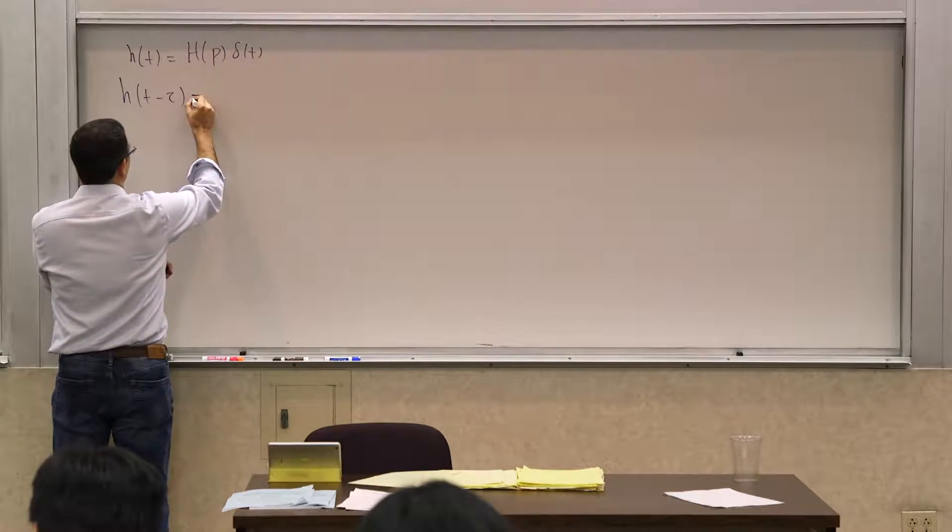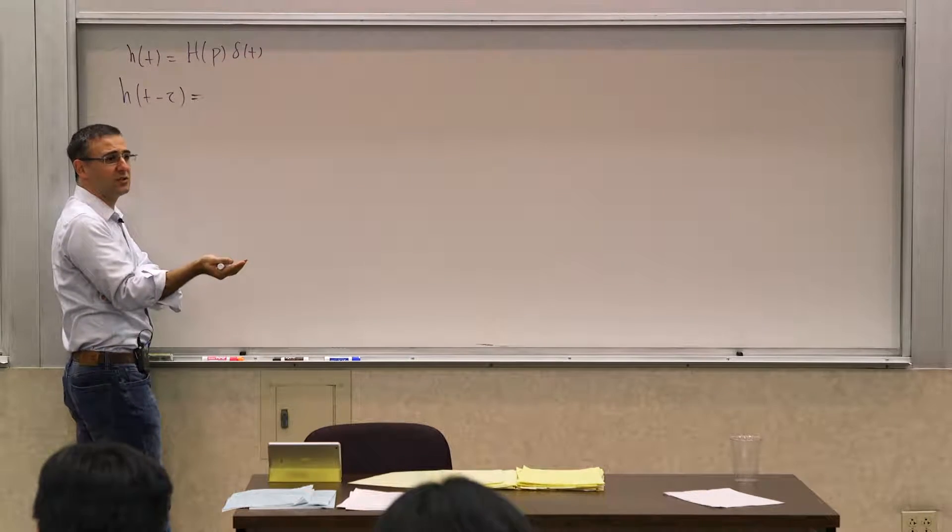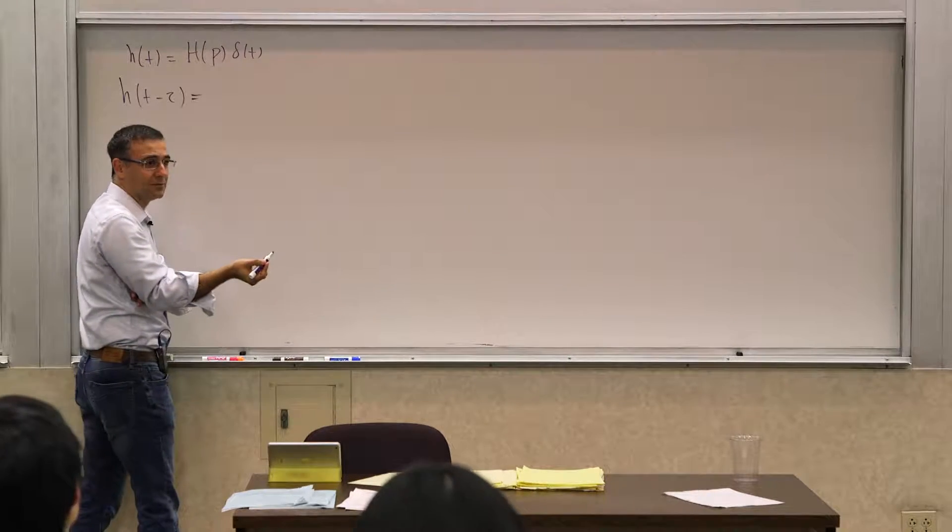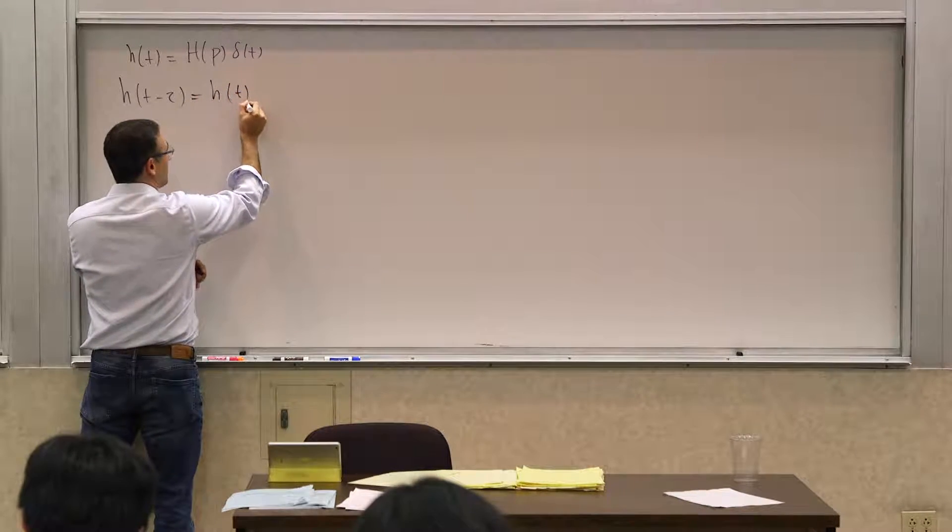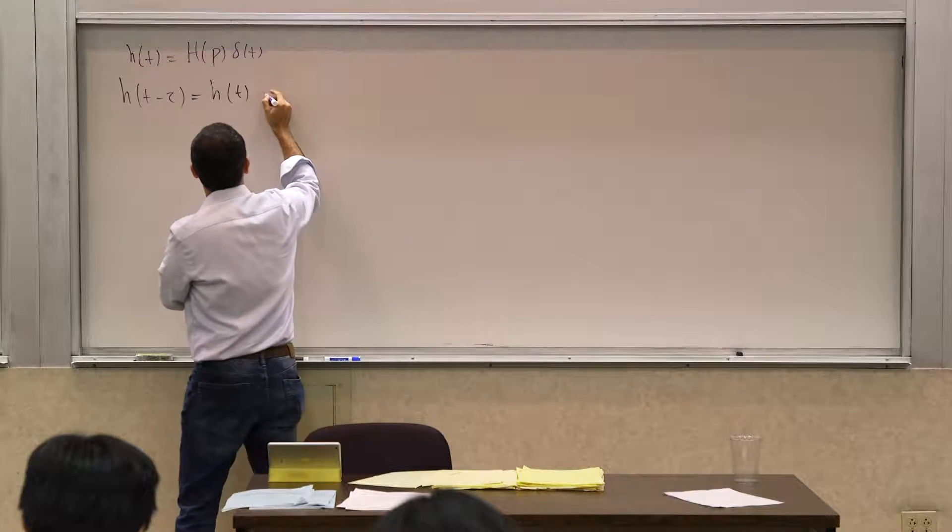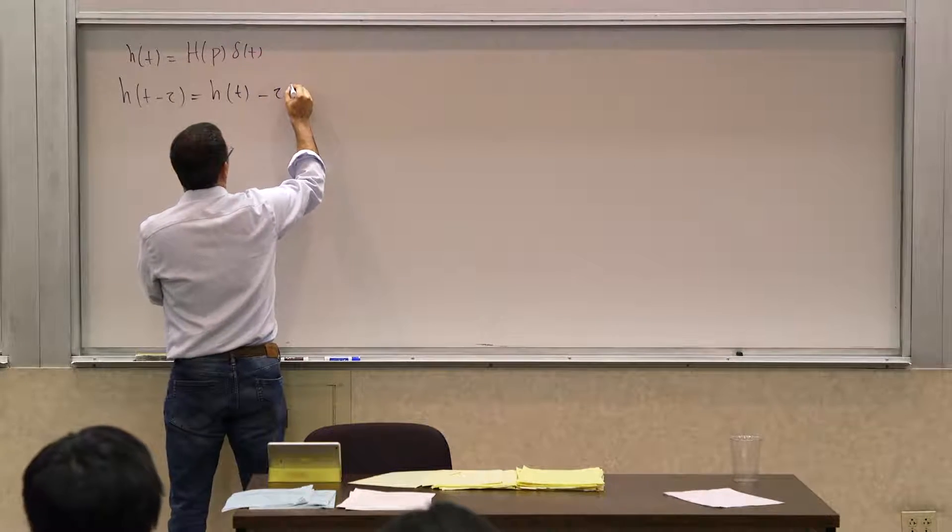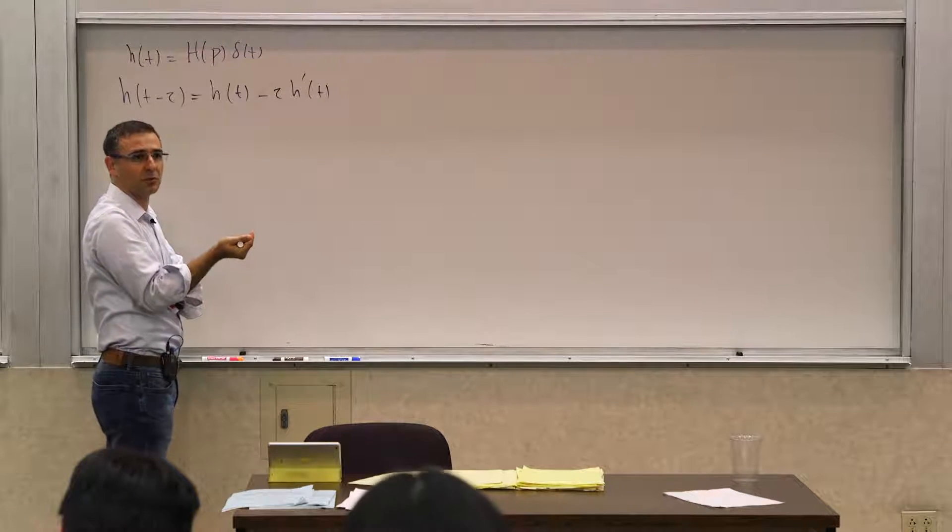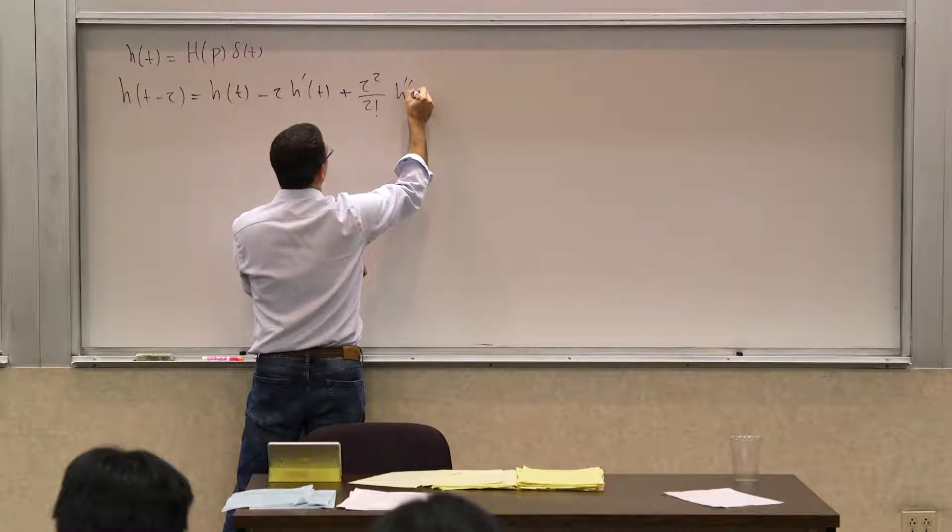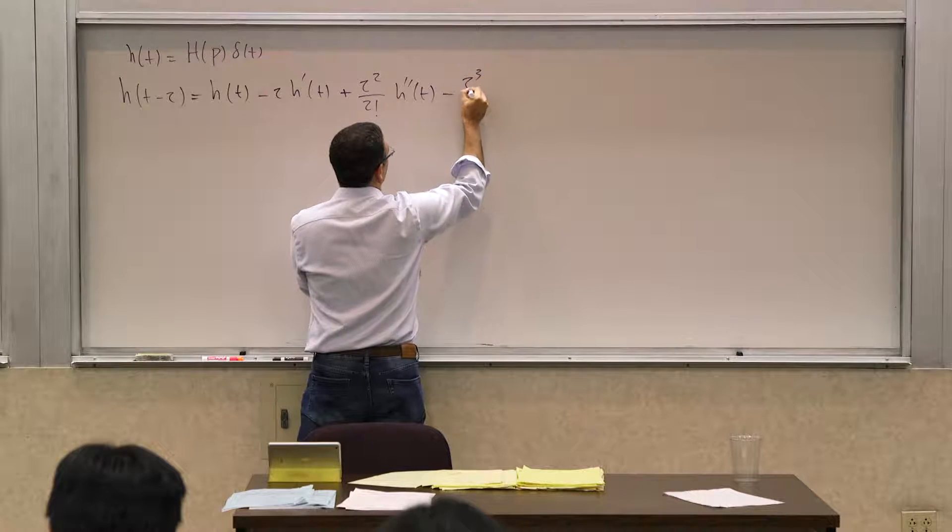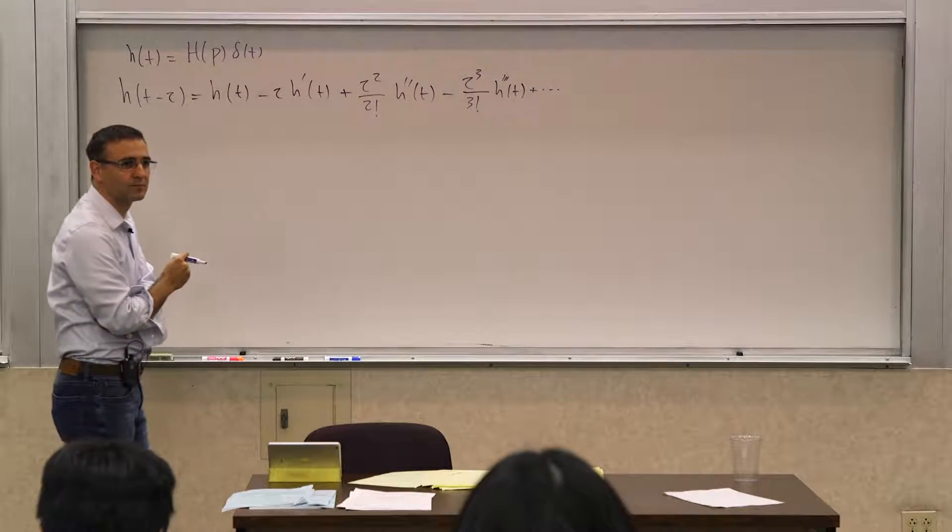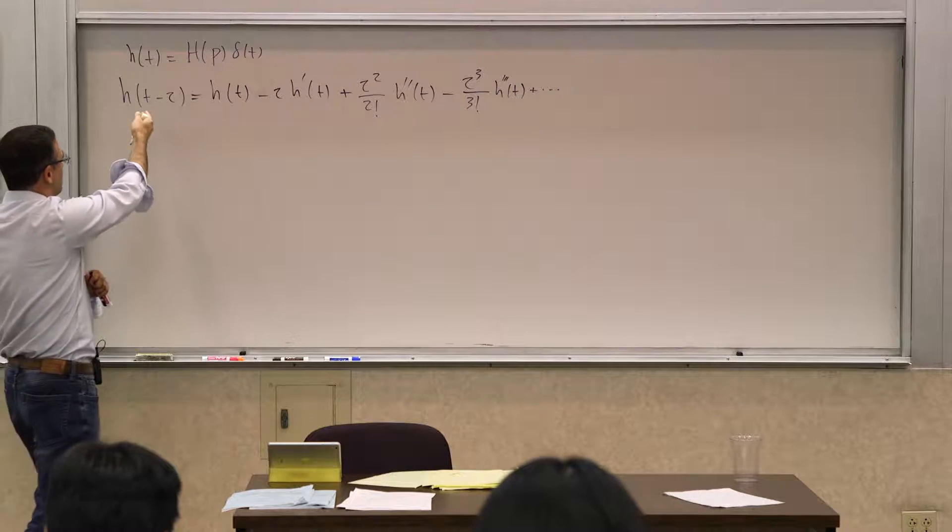you can write the Taylor series expansion, or McLaurin expansion more accurately, of this. This is a function, h of t, tau is some constant, tau is the delay, 3, 5, 7, some number, and t is the variable. So I can express this as h of t minus tau h prime of t. It's a Taylor series expansion, if you will, and so on and so forth. So you agree that this series expansion is associated with that.